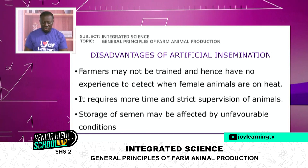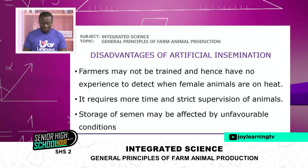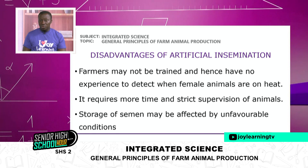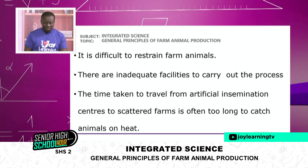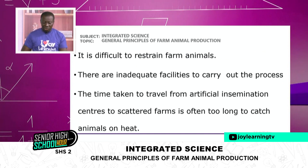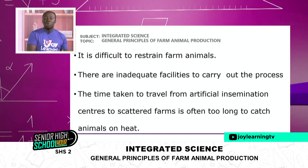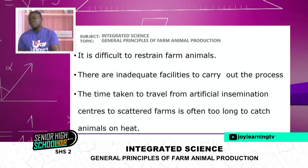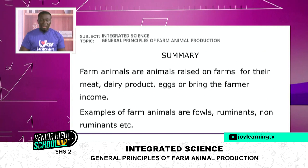There are also some disadvantages. Farmers may not be trained and hence have no experience to detect when female animals are on heat. It requires more time and strict supervision of animals. Storage of semen may be affected by unfavorable conditions. It is difficult to restrain farm animals and there are inadequate facilities. Sometimes the time taken to travel from one artificial insemination center to scattered farms is too long — the semen can be destroyed because you couldn't store it under proper conditions.